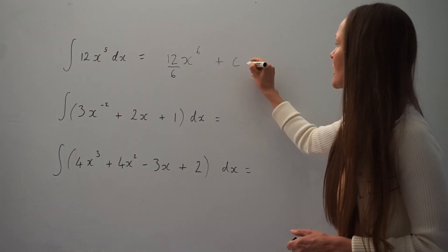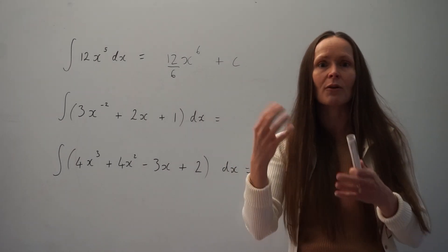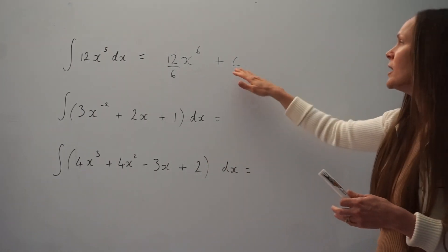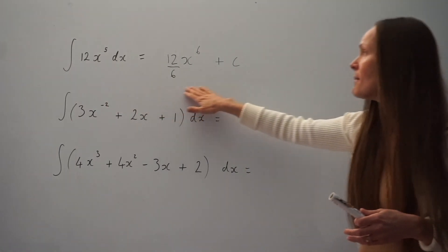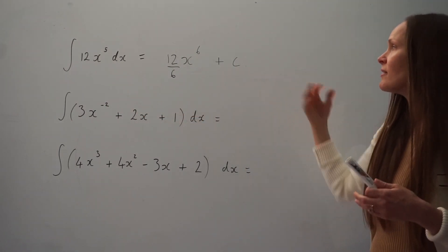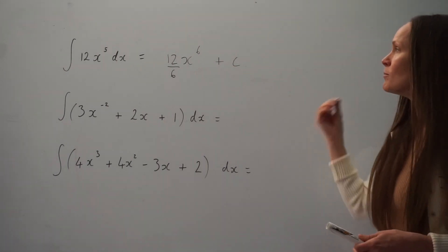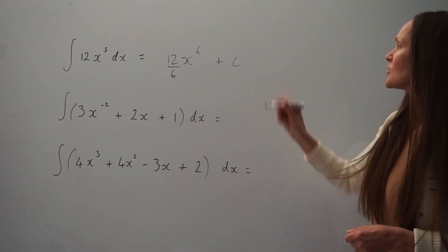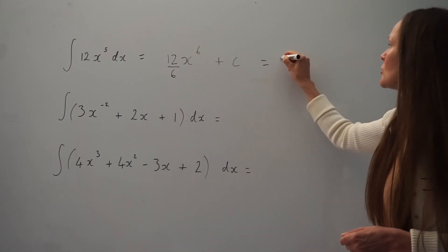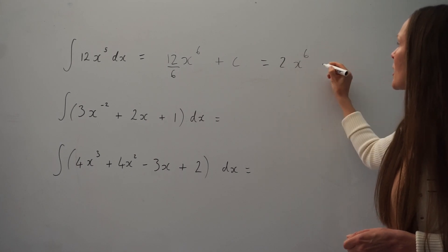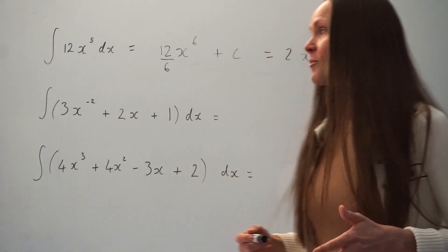We also have to remember to add a constant, which I'll call c. Remember when we differentiate a constant — a number that doesn't change like 4, 7, or negative 2 — it goes to 0. So when we integrate we have to add a constant back. We can't work out what it is without more information, but you must write plus c. Simplifying, 12 divided by 6 is 2, so the answer is 2x to the power of 6 plus c.